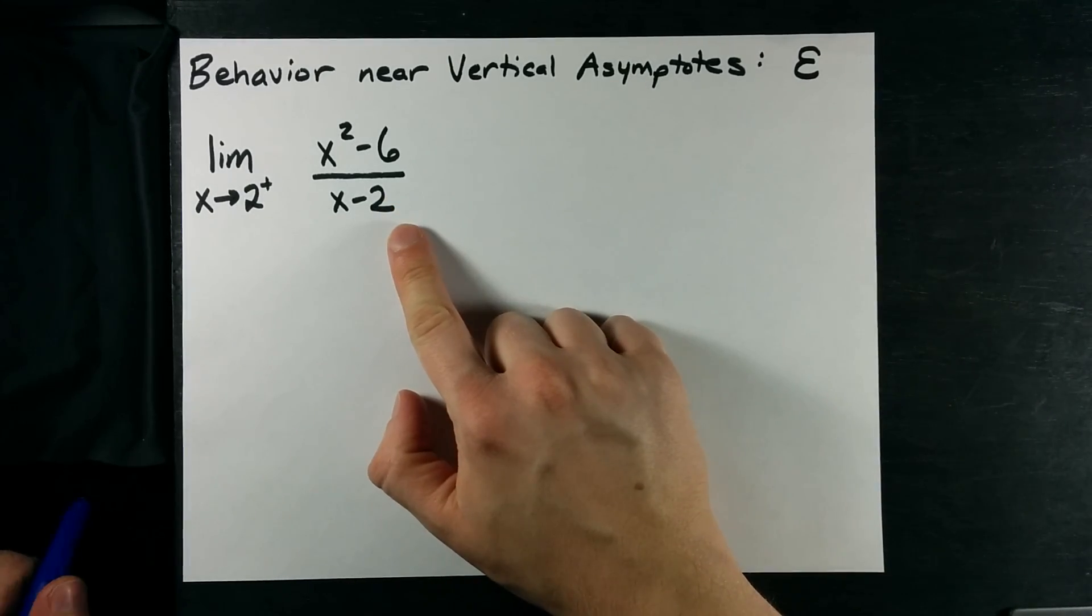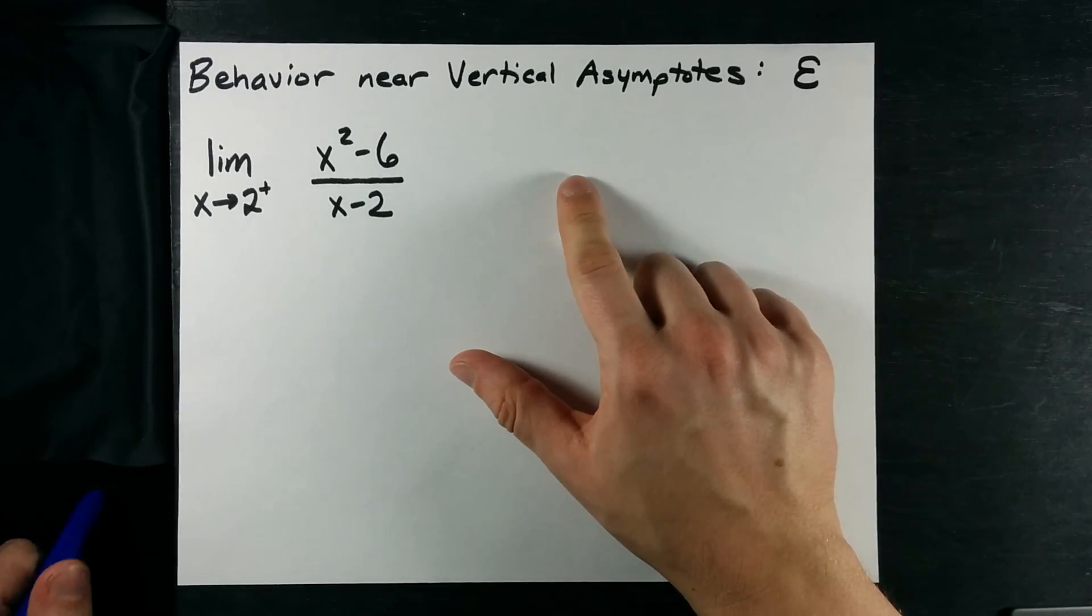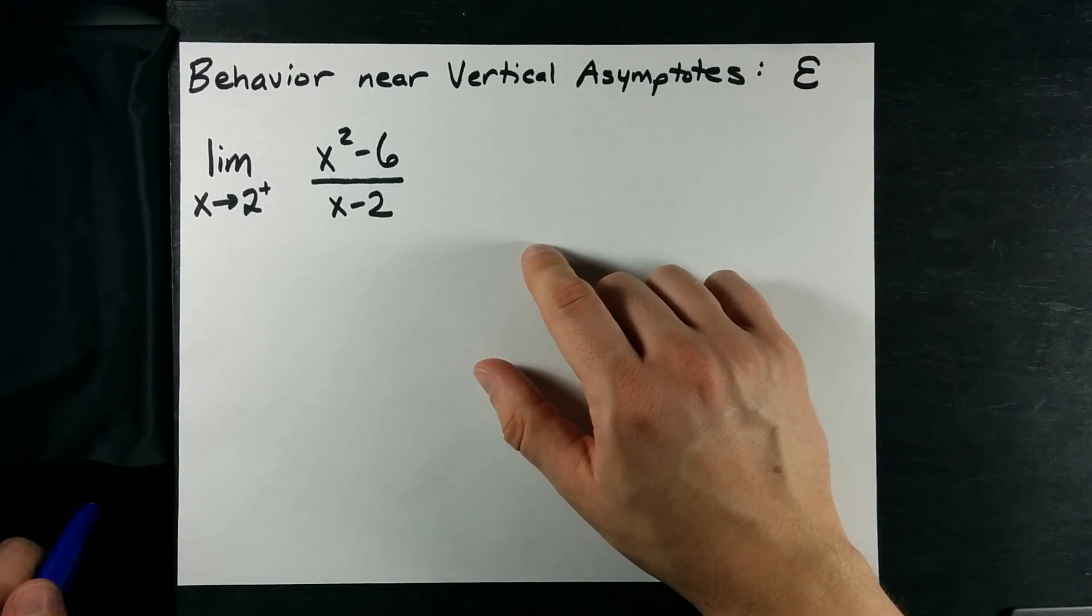When you have rational functions, discontinuities that happen can be holes or asymptotes, vertical asymptotes.